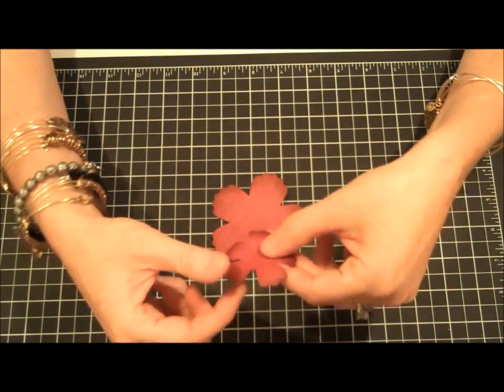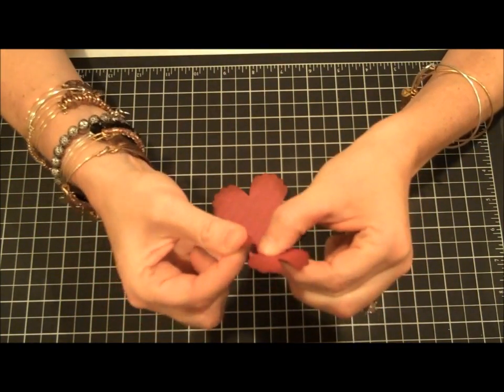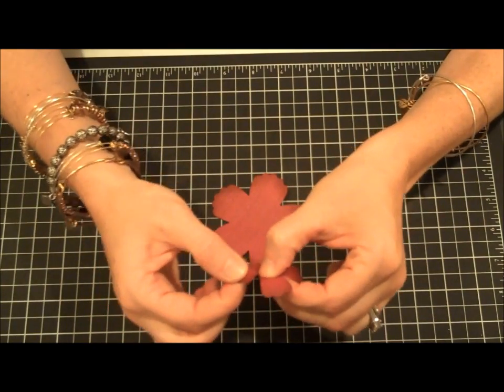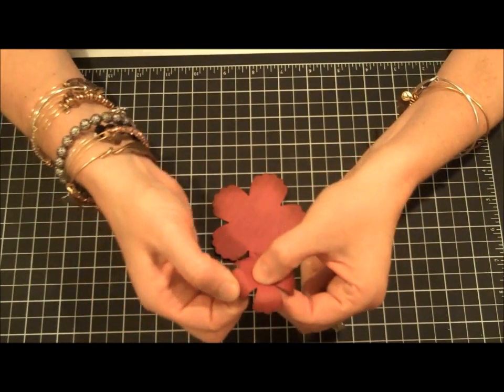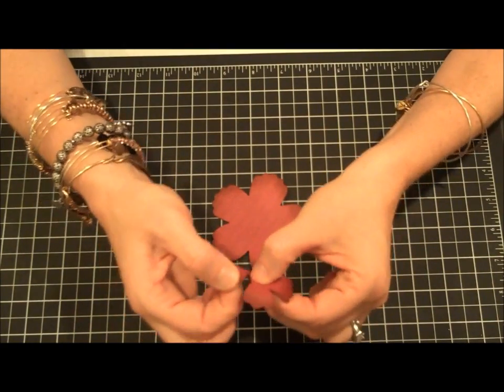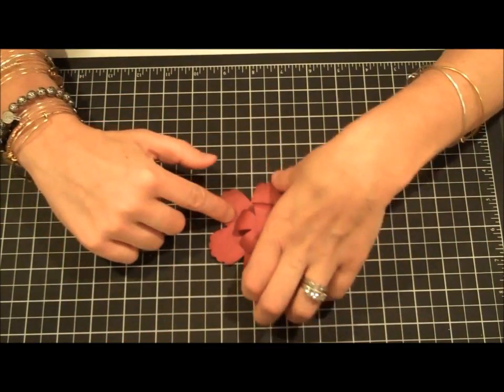For the smaller petal, the cardstock is pretty pliable. You can spritz it with water if you wanted to, but all I did to add some dimension was curl the petals down using my fingers. The sponging really adds some depth and dimension as well. Now we'll go ahead and set those aside.